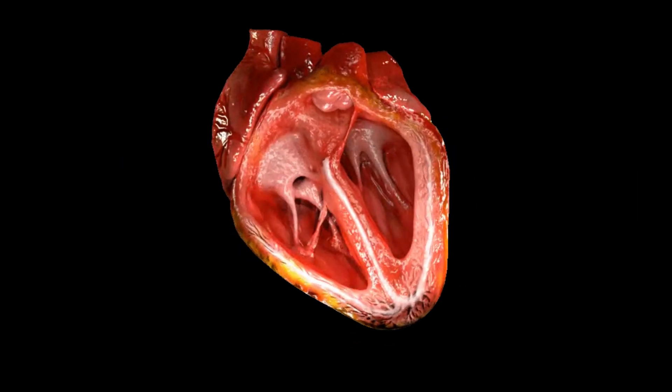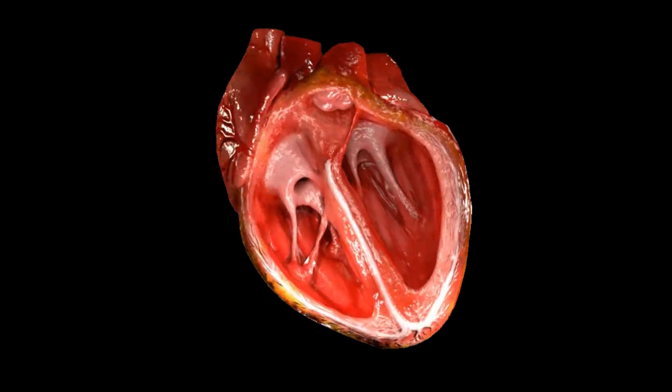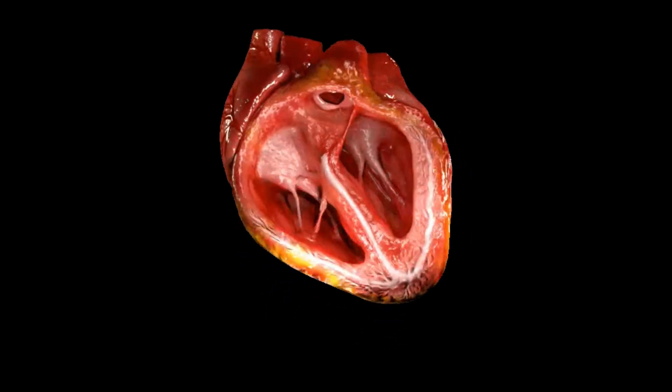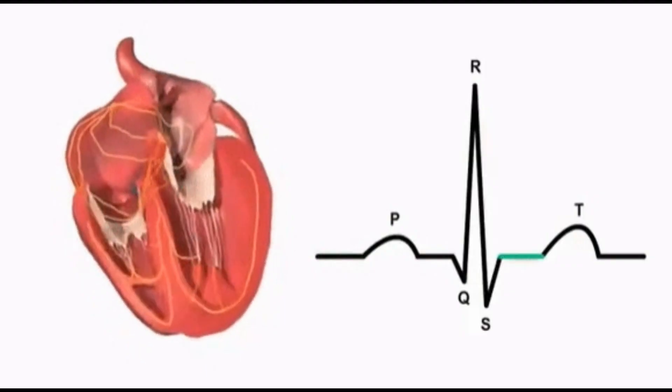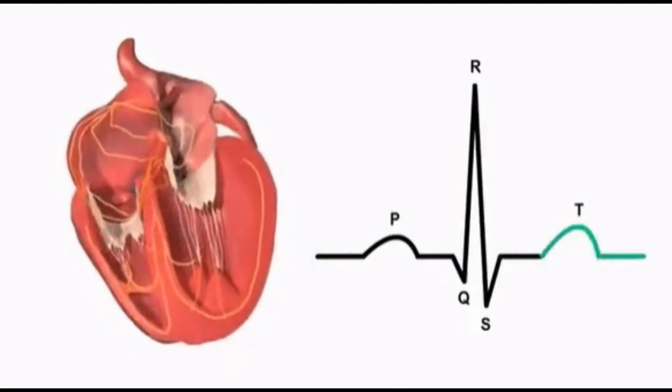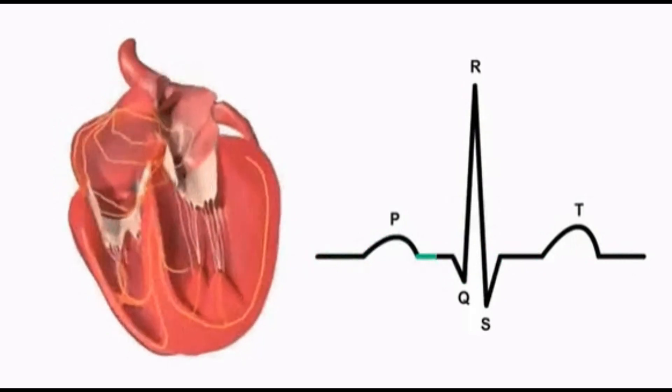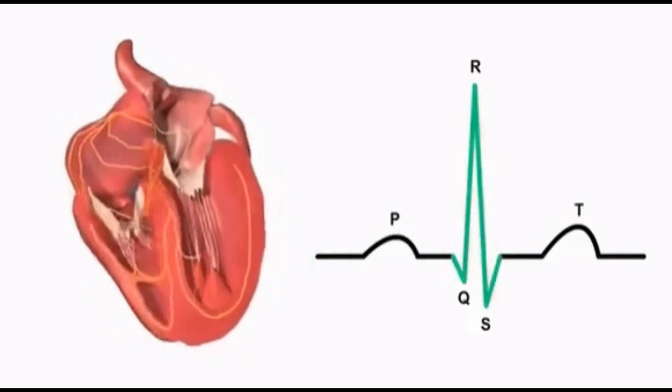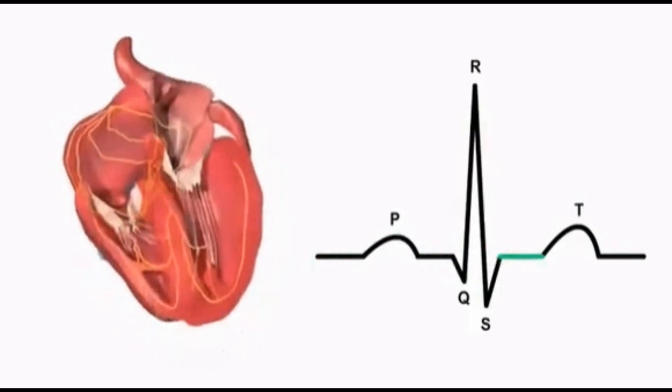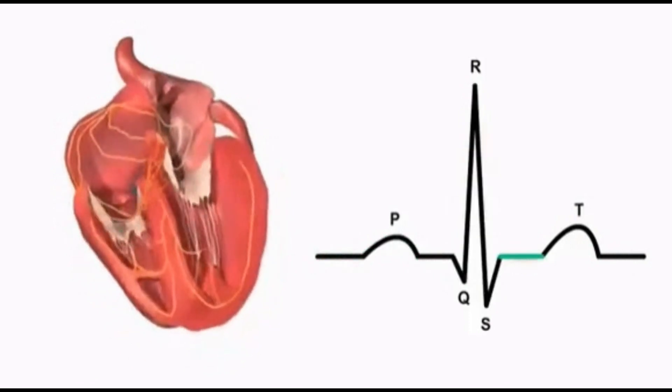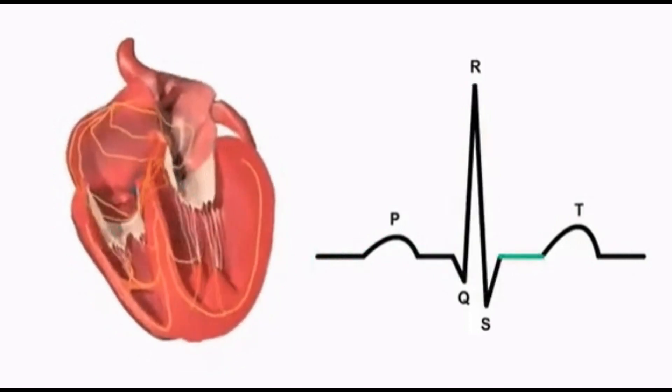What is the significance of the QRS complex? The QRS complex represents the contraction of the ventricles, which is essential for pumping blood to the body. The duration and morphology of the QRS complex can give important information about the heart's electrical conduction system and help diagnose conditions such as bundle branch block, ventricular hypertrophy, and myocardial infarction.